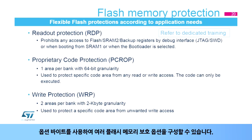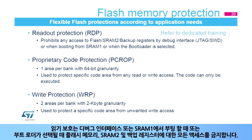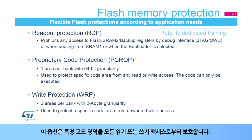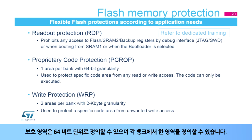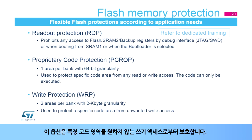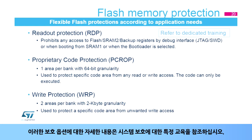Several flash memory protection options can be configured using the option bytes. The readout protection, configured using the RDP option byte, prohibits any access to the flash memory, SRAM2, and backup registers by the debug interface or when booting from SRAM1 or when the bootloader is selected. The proprietary code protection, configured using the PCROP option byte, protects a specific code area from any read or write access — the code can only be executed. The protected area can be defined with 64-bit granularity, and one area can be defined in each bank. The write protection, configured using the WRP option byte, protects specific code areas from unwanted write access with 2 kilobyte granularity.